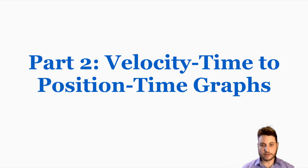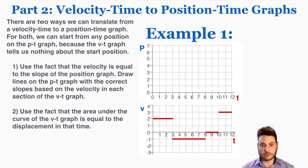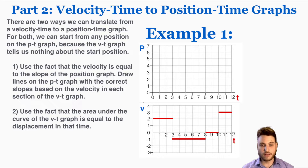Now we'll go into translating from velocity-time to position-time graphs. There are two different ways to do this. For both methods, we can start from any position on the position-time graph because the velocity-time graph tells us nothing about the starting position — this is really important. We can either use the fact that velocity equals the slope of the position graph and draw lines with the correct slopes, or we can use the fact that the area under the curve of the velocity-time graph equals the displacement in that time.